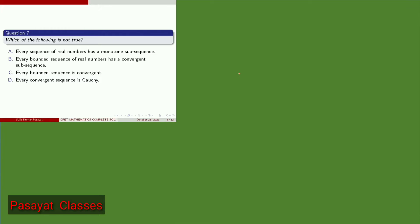Question 7 asks: which of the following is NOT true? Four options are given. Option 1: every sequence of real numbers has a monotone subsequence — this is a correct statement. Option 2: every bounded sequence of real numbers has a convergent subsequence — this is also a true statement. Option 3: every bounded sequence is convergent — observe this is the wrong statement. Option 4: every convergent sequence is Cauchy — this is also a true statement.